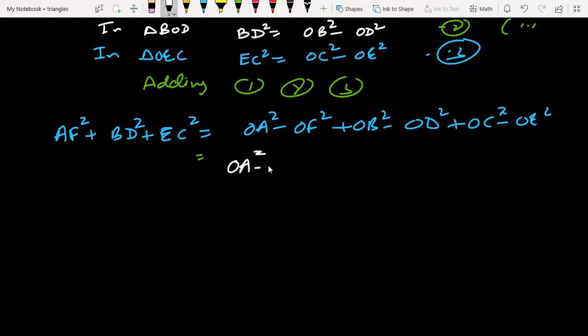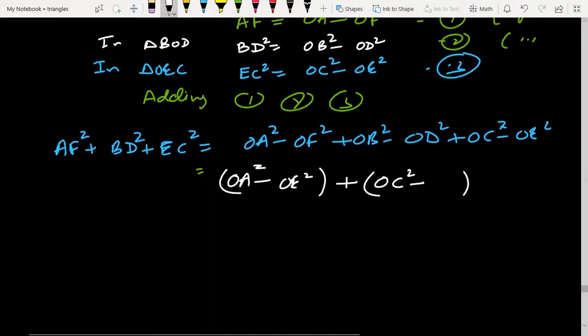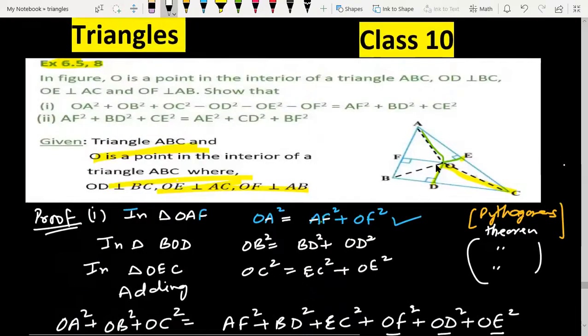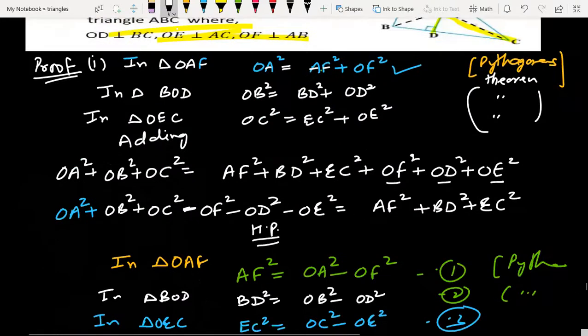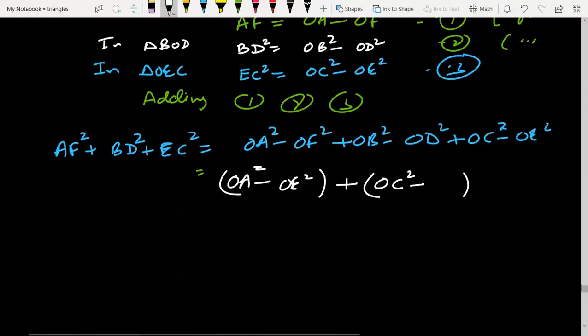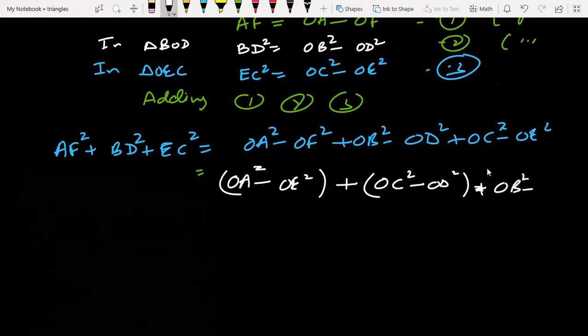OA square minus OE square. We have to do this in a bracket. Then OC square minus OD square. And then what is left? OB square minus OF square. So whatever we need, we will get from the figure. OA minus OE, this will be AE. OC minus OD will be CD.